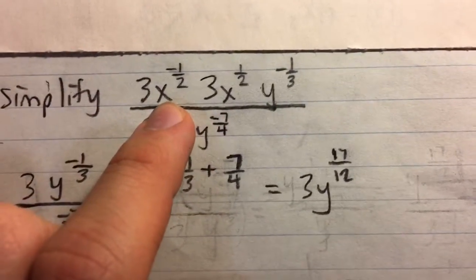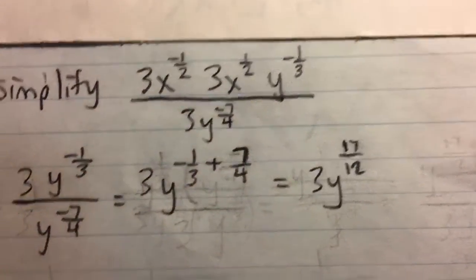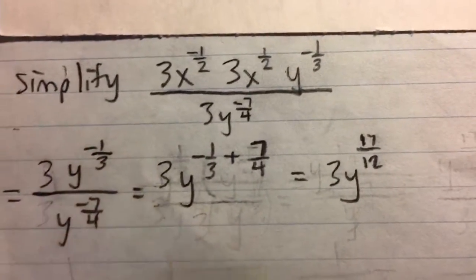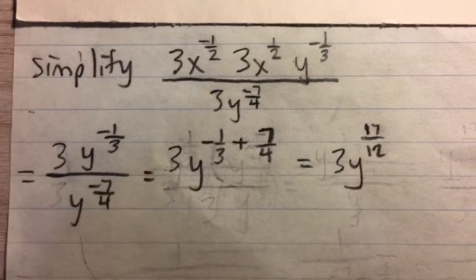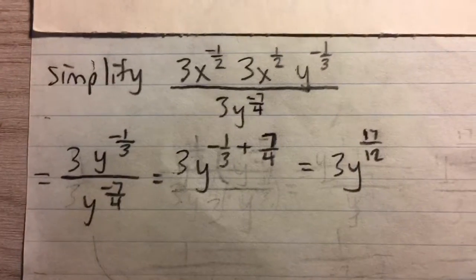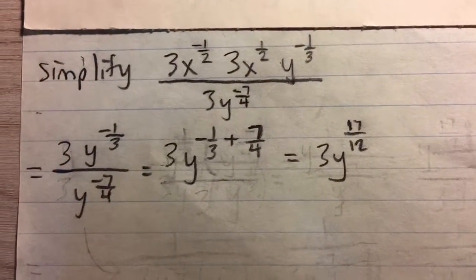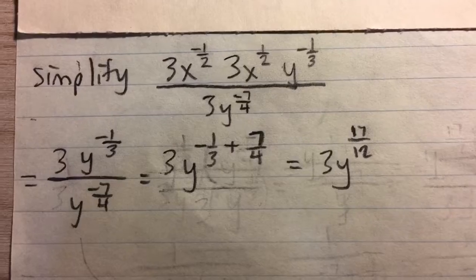Now we have x to the negative 1 half times x to the 1 half. When we multiply them, we're going to add the exponents, and it's going to add to 0. And x to the 0, any number to the 0 is 1, so it just cancels each other out.